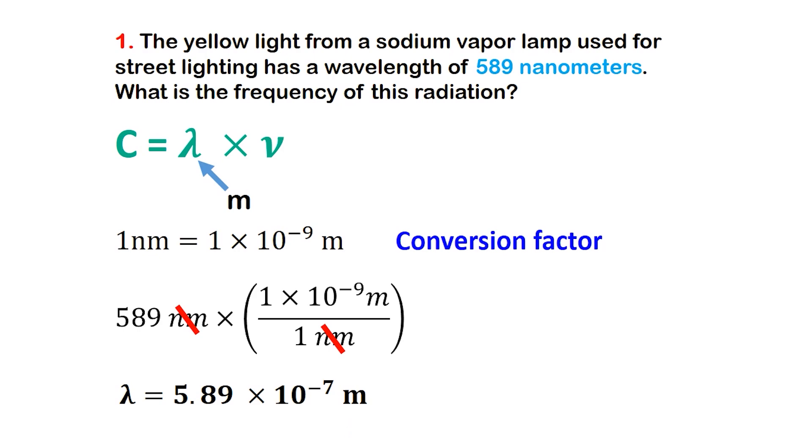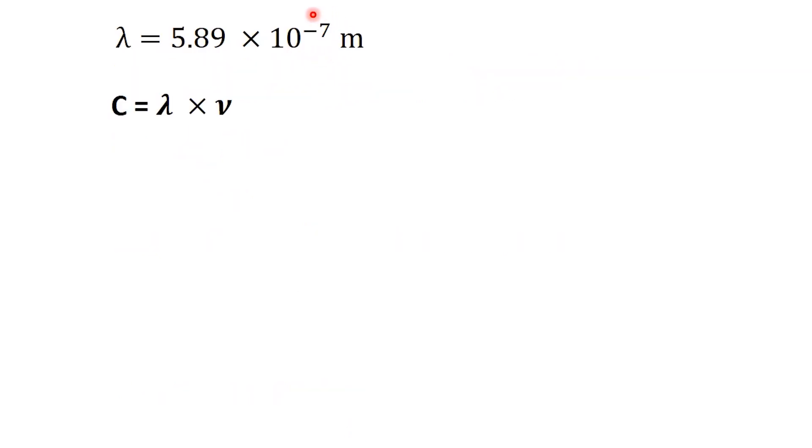Now that our wavelength is in meters, we can move on to the next step. To find the frequency, we'll rearrange the equation C equals lambda times nu so that nu is on its own. nu equals C divided by lambda.